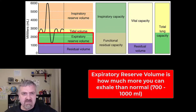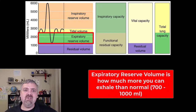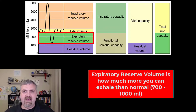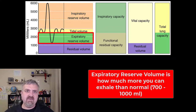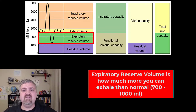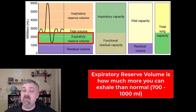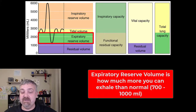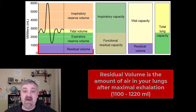Your expiratory reserve volume — how much more can you exhale than normal. Think about it: you take a normal quiet breath, how much more can you inhale than that? That is your inspiratory reserve volume. How much more air could you blow out than that? That is going to be your expiratory reserve volume. As far as numbers, it is usually going to be between 700 and 1,000 milliliters.